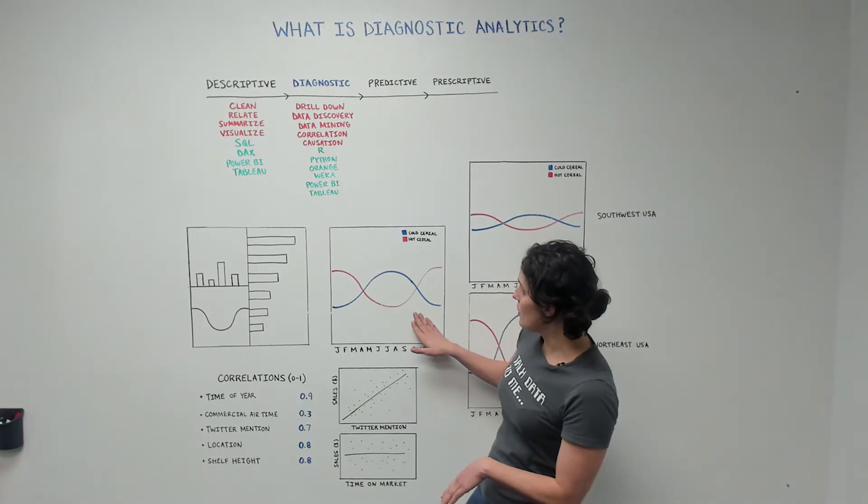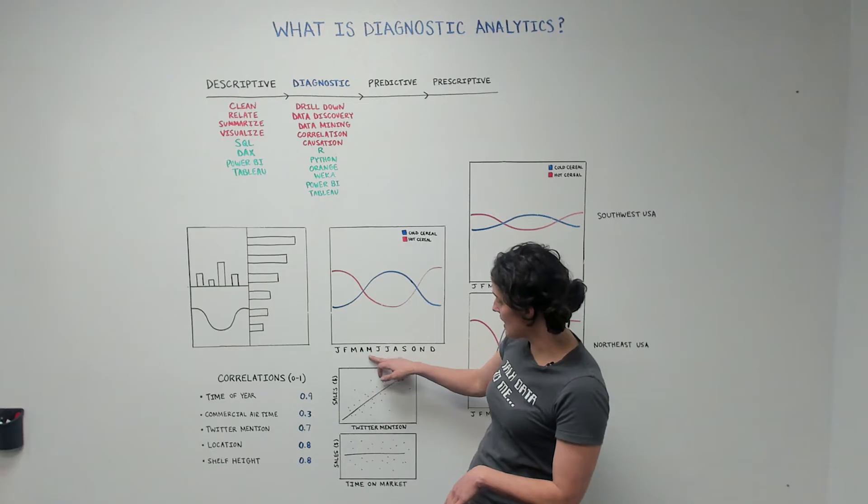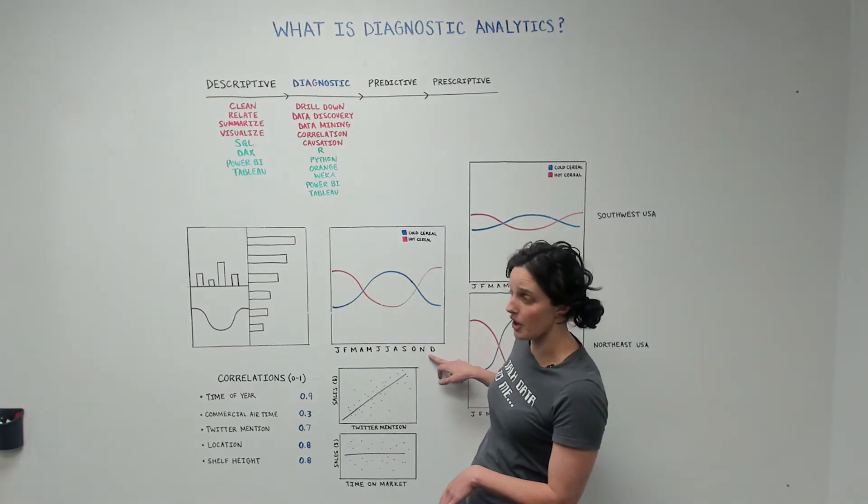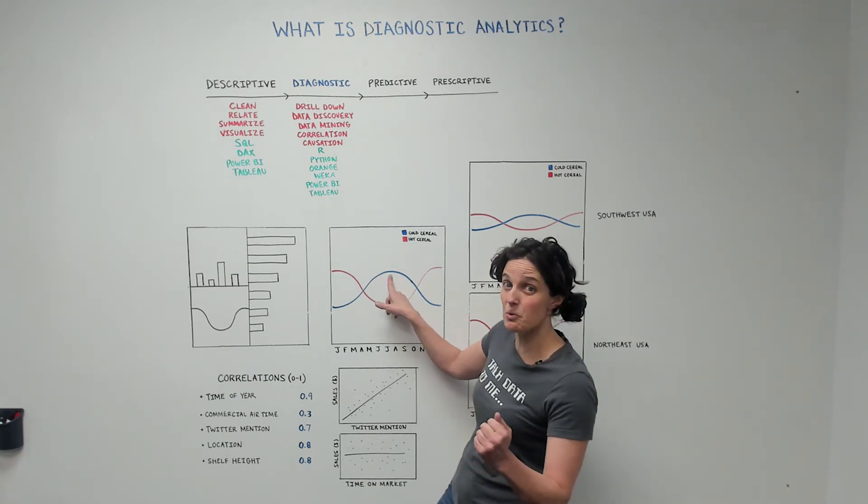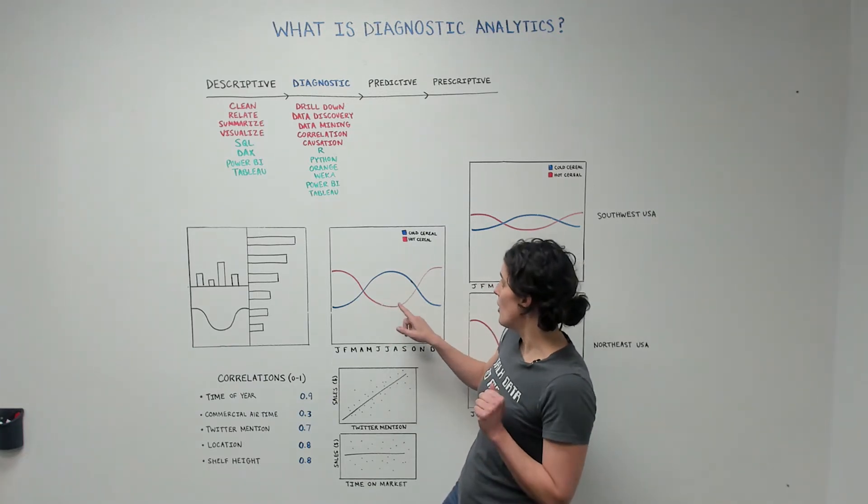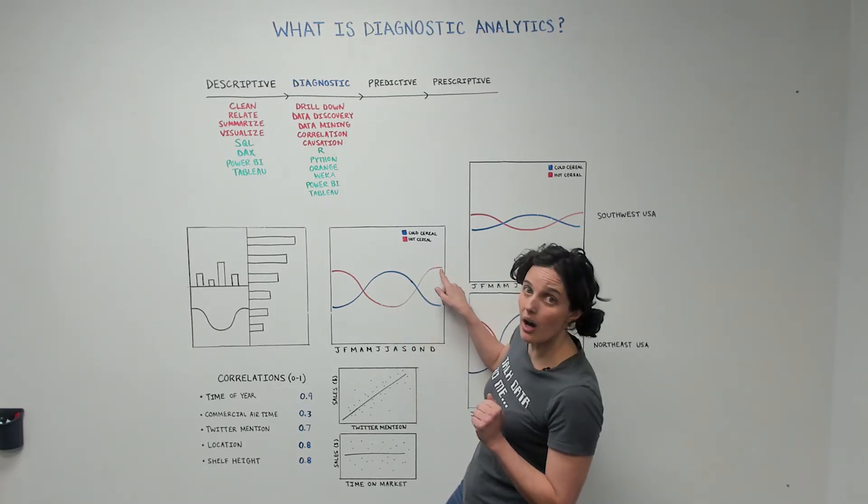Let's take an example of cold and hot cereal. On this axis, we have the months of the year, and we see that during the summer months, the cold cereal really sells really well. And the oatmeal doesn't sell so well, but it sells really well in the winter months.